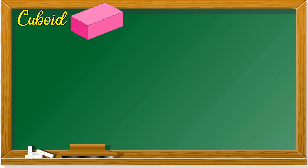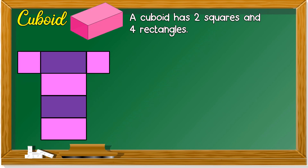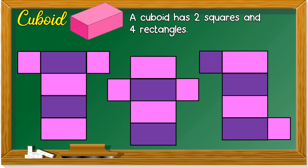Now we look at cuboid. This is a cuboid. Cuboid has six faces as well, but they are all rectangles. It can have two squares and four rectangles, or six rectangles. As long as when you fold it, it can become a cuboid. Asalkan bila kamu lipat dia, dia boleh menjadi cuboid.